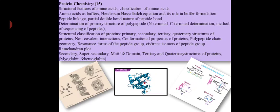We will also study secondary, super-secondary, motif and domain, tertiary, and quaternary structures of proteins, along with examples of globular and fibrous proteins. Globular proteins include hemoglobin and myoglobin, while fibrous proteins include keratin and collagen. We are going to discuss all these topics in detail when we start our first unit, Protein Chemistry.